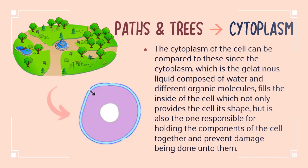Without proper paths and some trees, a park can be very boring for visitors. The paths that we created also help visitors go from one place to another with ease. In our park, we also planted some trees to fill up vacant lands. In a cell, the counterpart of trees and paths in the vacant part of the park is the cytoplasm. The cytoplasm is composed of water and different organic molecules responsible for holding the components of the cell together.